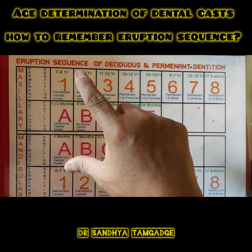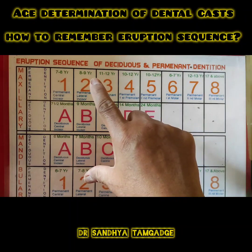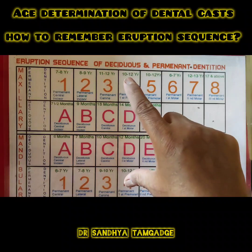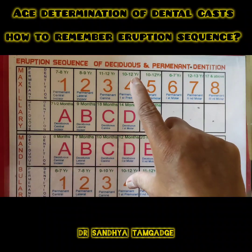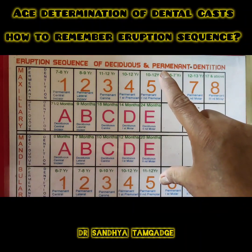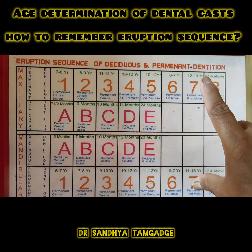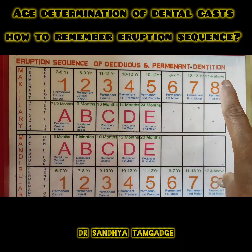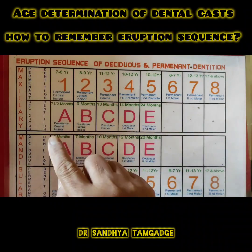In the permanent dentition, 1 and 2 are central and lateral incisors, 3 is the canine, 4 is the first premolar, 5 is the second premolar, 6 is the first permanent molar, 7 is the second permanent molar, and 8 is the third molar, also called the wisdom tooth.